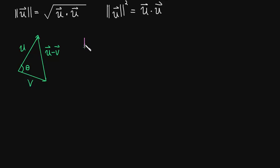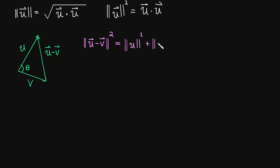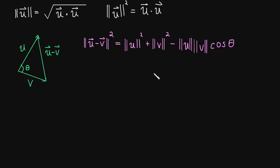The law of cosines tells us that the length of the side u minus v squared equals the length of u squared, plus the length of v squared, minus 2 times the length of u times the length of v times the cosine of the angle between them. This is really just saying c squared equals a squared plus b squared minus 2ab cosθ. We have a side u minus v, a side u, and a side v.